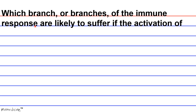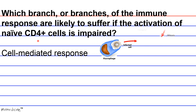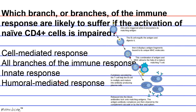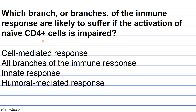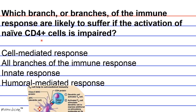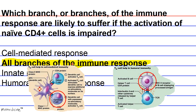Question: Which branch or branches of the immune response are likely to suffer if the activation of naive CD4+ cells is impaired? A. Cell-mediated response. B. All branches of the immune response. C. Innate response. D. Humoral mediated response. Answer: Naive CD4+ cells differentiate into helper T cells. Cytotoxic T cells and B cells depend on co-stimulation with helper T cells, and helper T cells also release chemicals that affect the innate response. Thus, all branches of the immune response suffer if CD4+ cells are not being activated — answer B.